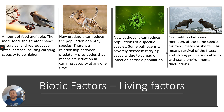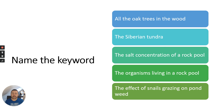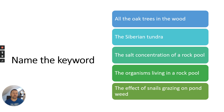This means survival of the fittest, with strong populations able to withstand environmental fluctuations. Now here's a recap of the keywords in this section. Please pause the video and have a go at matching the keywords to ecosystems and populations.